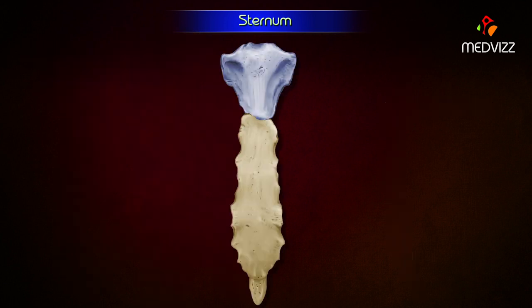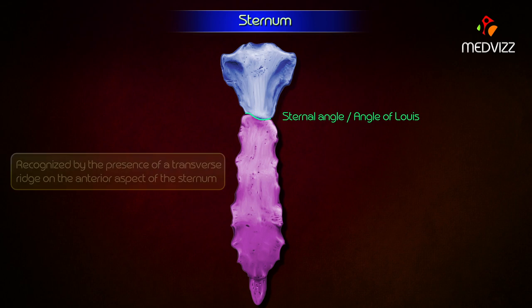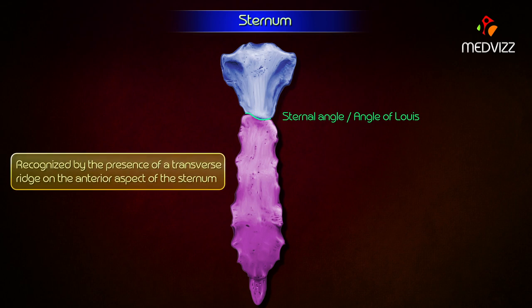The manubrium makes a slight angle with the body at their junction, called the sternal angle or angle of Lewis. It is recognized by the presence of a transverse ridge on the anterior aspect of the sternum.